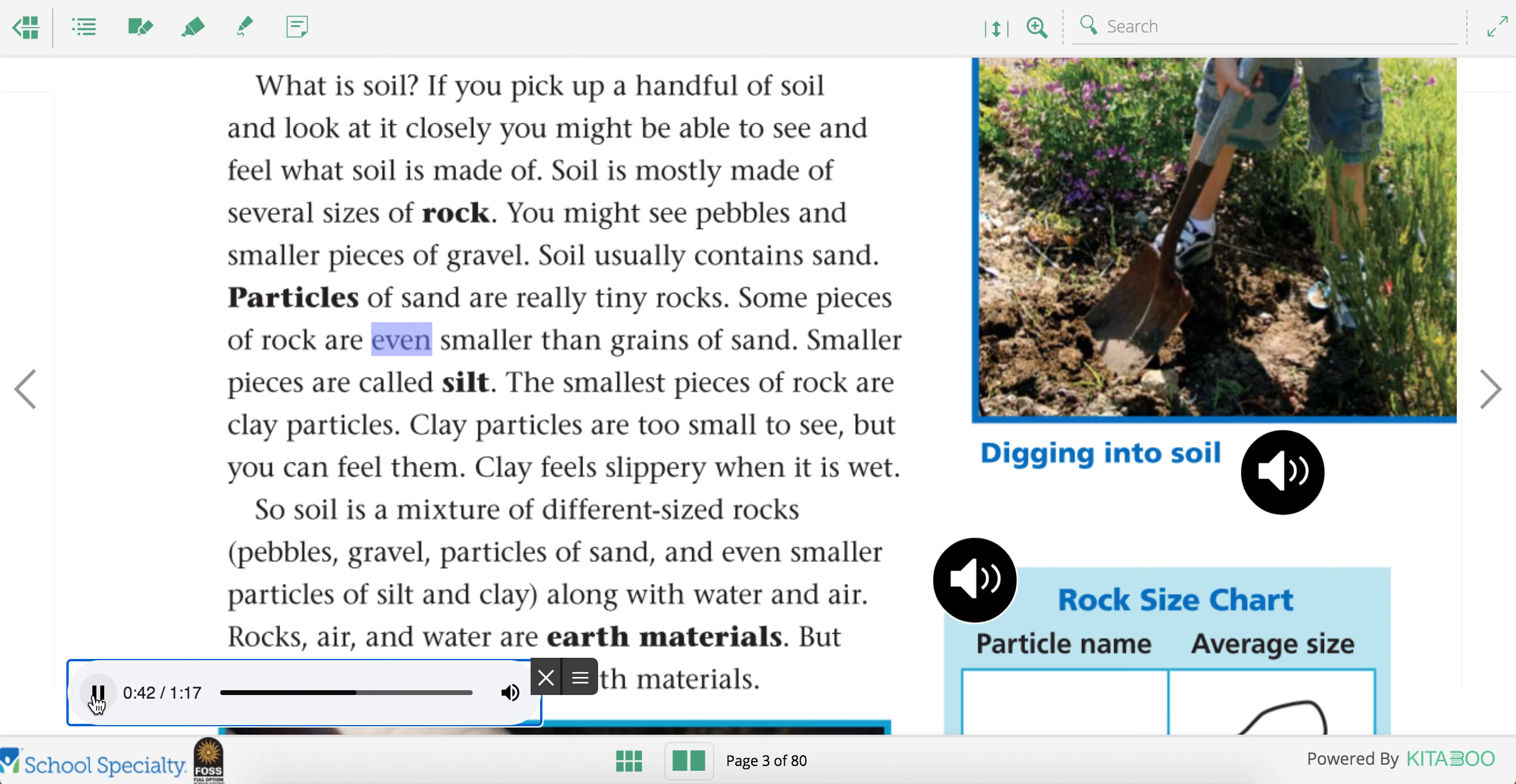Some pieces of rock are even smaller than grains of sand. Smaller pieces are called silt. The smallest pieces of rock are clay particles. Clay particles are too small to see, but you can feel them. Clay feels slippery when it is wet.